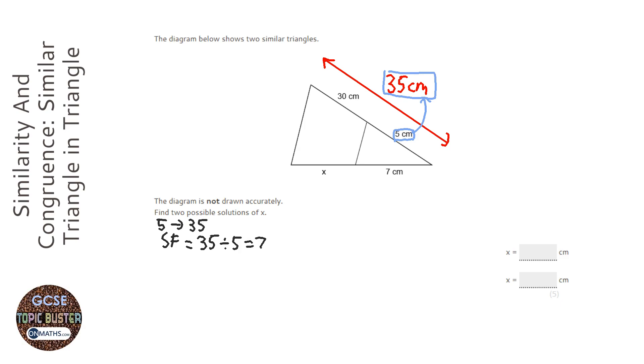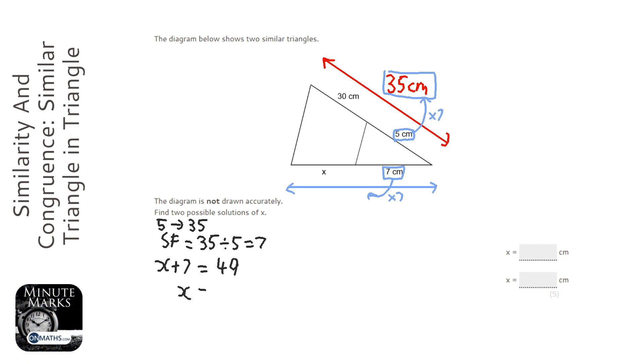So therefore this one here to go to the larger length, we're going to times that also by 7. If this times by 7, then this one will times by 7, so that will be 49. So x plus 7, the whole length would be 49. To find x, it's just going to be 7 less than that, so it's 42. So x is definitely looking like it's 42.